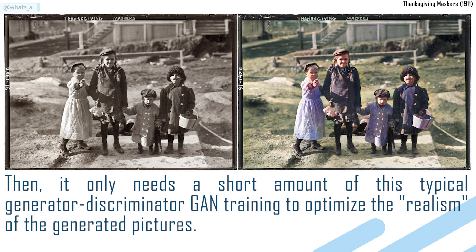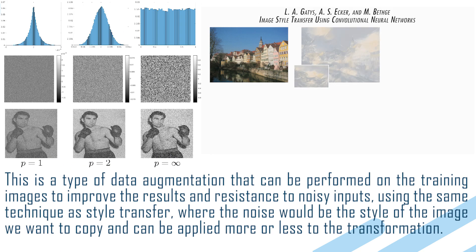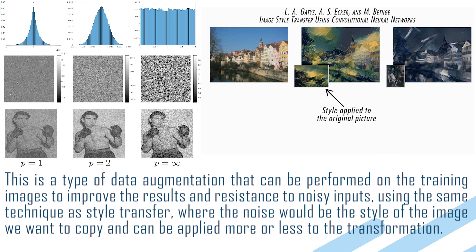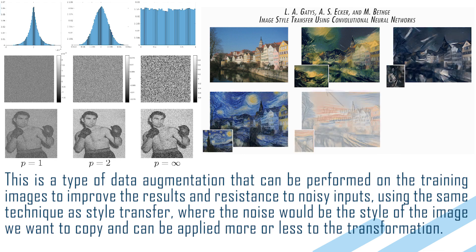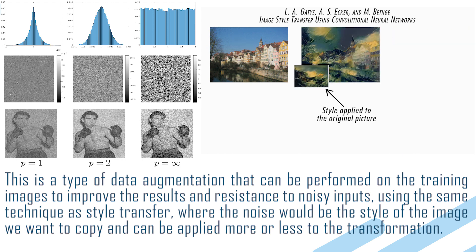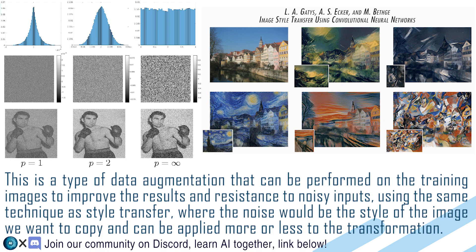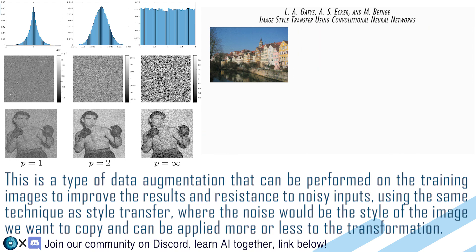Then it only needs a short amount of typical generator-discriminator GAN training to optimize the realism of the generated pictures. Gaussian noise is also randomly applied to images to generate fake noise during training. This is a type of data augmentation that can be performed on the training images to improve results and resistance to noisy inputs, using the same technique as style transfer, where the noise will be the style of the image we want to copy and can be applied more or less to the transformation.